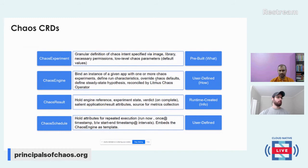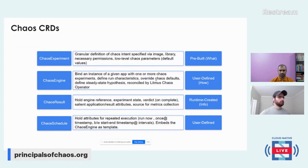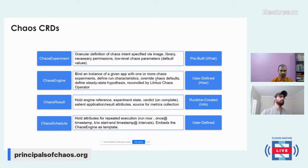The chaos engine triggers the fault injection process and the results are stored in a chaos result — a separate resource because there is huge scope for expanding the schema. In the chaos result you can store the experiment status, the verdict upon completion based on steady state validation constraints, and how each constraint fared during the experiment. We use something called probes to define those constraints. You can also schedule recurring experiments with different scheduling options — strictly scheduled or with some randomness thrown in.